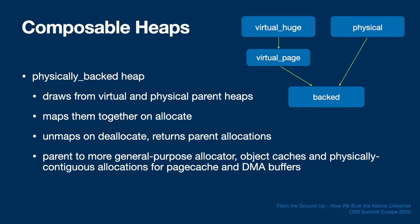The ability to specify a parent heap on ID heap creation points to the composable nature of heaps in Nanos. The physically-backed heap does this concretely: an allocation from this heap translates into allocations from both virtual and physical parent heaps, followed by a call to the page table code to map the virtual allocation to the physical. The return virtual address is usable, physically contiguous memory. On deallocation, the mapping is removed and the virtual and physical allocations are returned to their respective heaps.